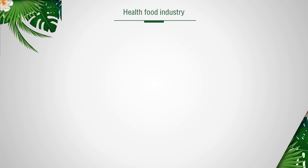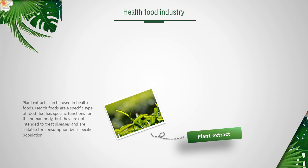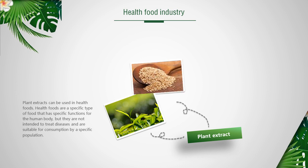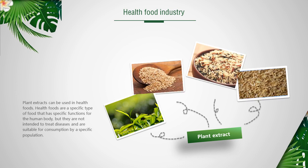Plant extracts can be used in health foods. Health foods are a specific type of food that has specific functions for the human body, but they are not intended to treat diseases and are suitable for consumption by a specific population. For example, endogenous plant antioxidants extracted from tea, sesame and wild rice, as well as from other plant sources such as rice husks, can inhibit lipid peroxidation and protect the membrane from oxidative damage of membrane function.